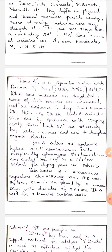Generally, type A zeolites are synthetic, hydrous, alkali-aluminosilicates with exceptionally advantageous structural channels and cavities and are used as a selective sorbent for drying gases and solvents.